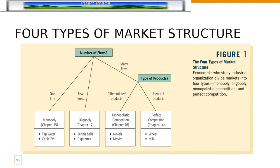This figure is a great little reference for breaking down and deciding whether or not a firm in operation is a perfectly competitive monopoly, monopolistic competition, or oligopoly. The first question you need to ask yourself is how many firms are there in this market? If there's only one firm, that's easy enough — that's monopoly. Examples include things like tap water and cable TV.